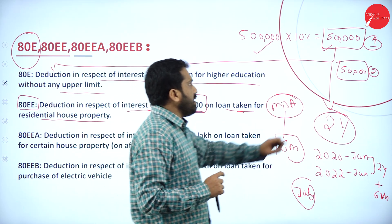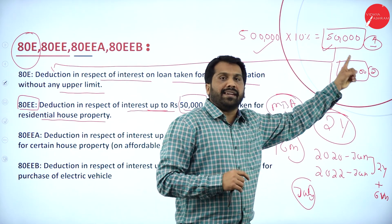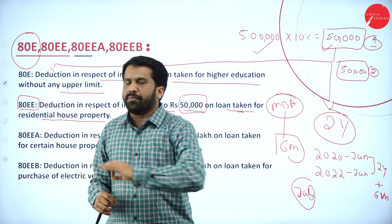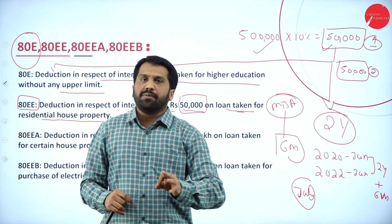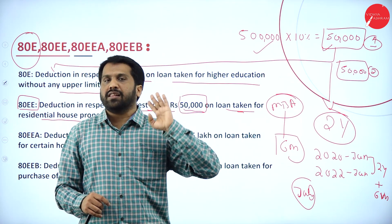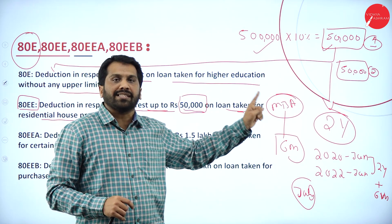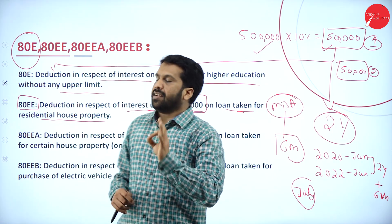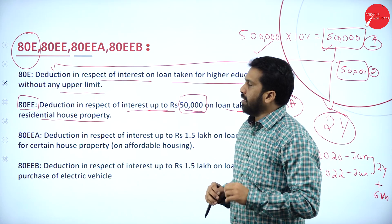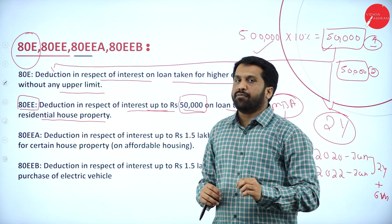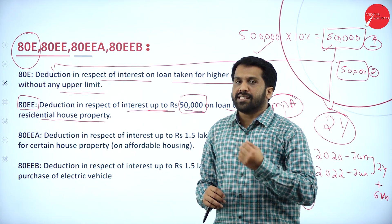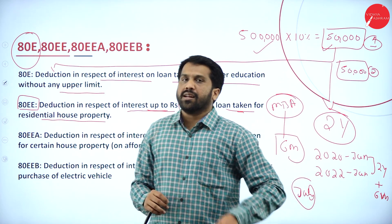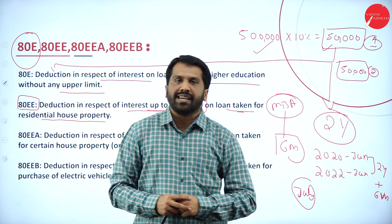Section 80E does not talk about your principal amount — it talks about only interest. Whatever interest paid is unlimited; even if you are paying interest of fifty lakh, you can claim it as exemption under Section 80E. Section 80EE is for any house taken for residential purpose, and the interest paid on that — up to fifty thousand — is exemption.